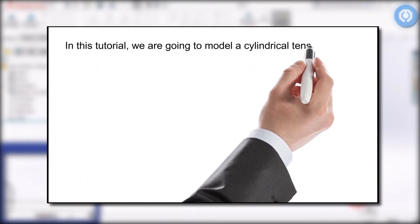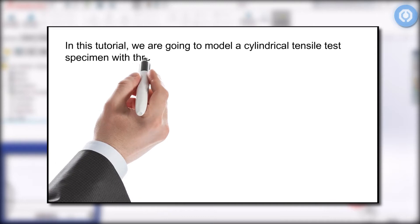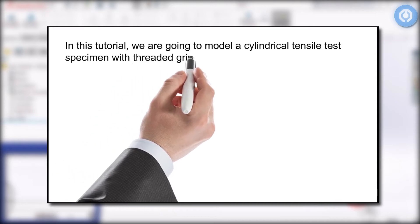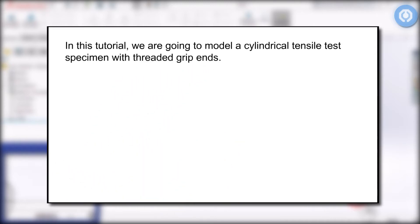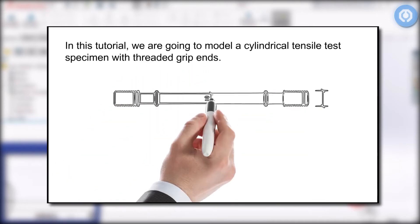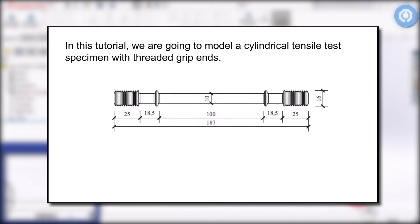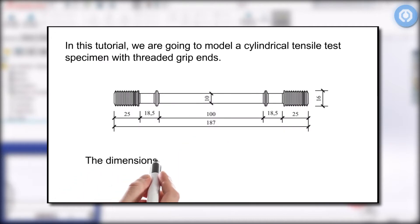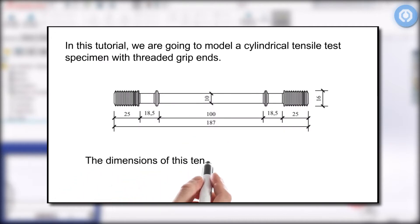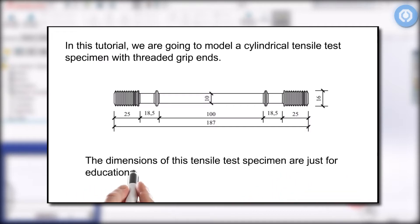In this tutorial, we are going to model a cylindrical tensile specimen with threaded grip ends. The dimensions of this tensile specimen are just for educational purposes.